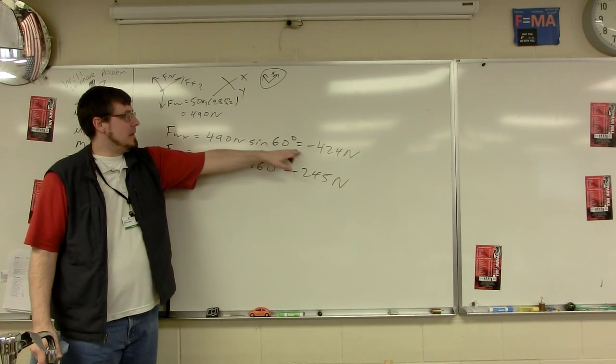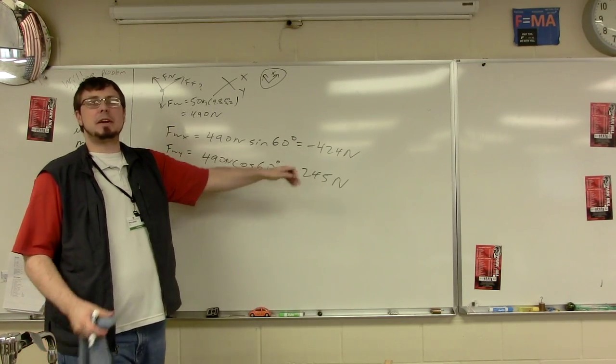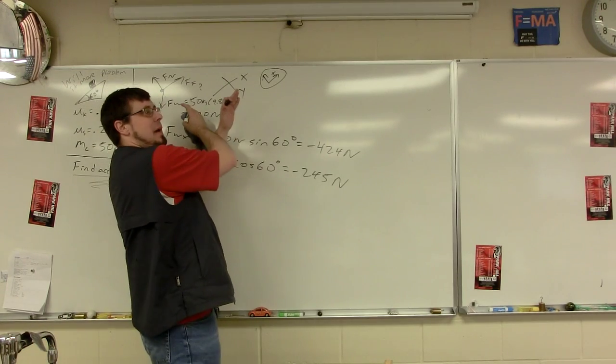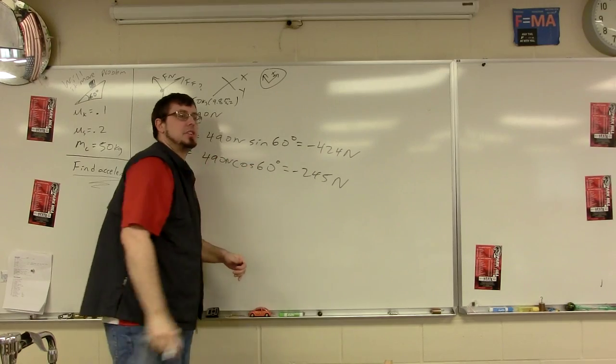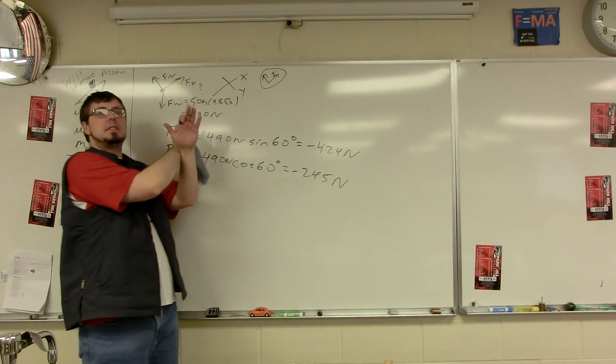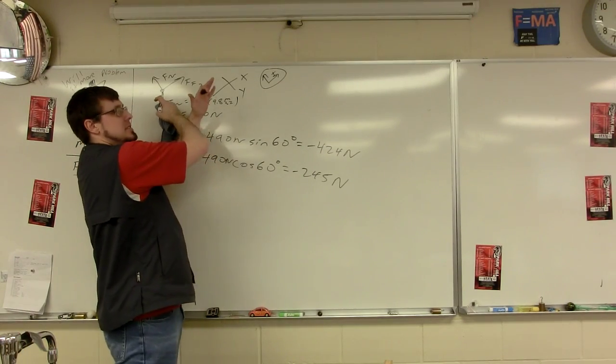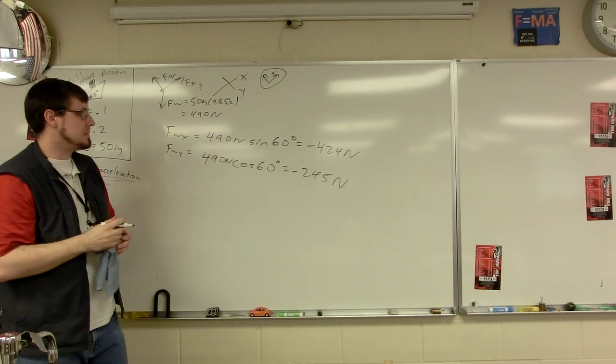So weight in the x, weight in the y. And it makes sense that the x component's bigger because we've tilted the xy axis past 45. So most of the weight is in the x direction. That makes sense because we've got a really steep hill and we're rotating our x axis to be along that really steep hill.